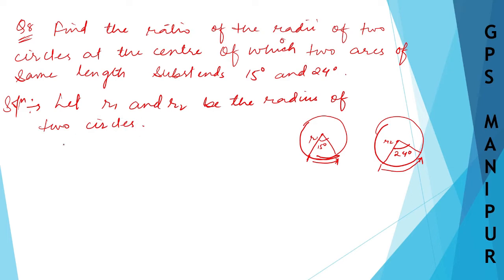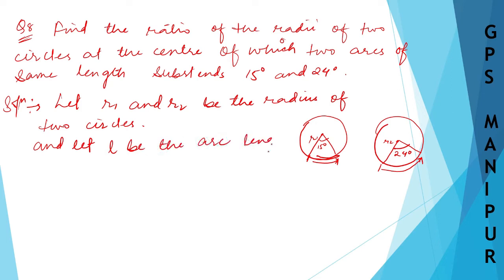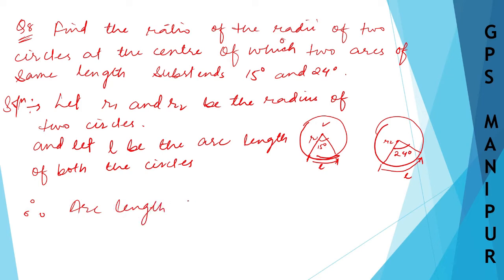Let r1 and r2 be the radii of the two circles, and let l be the arc length of both the circles. This one is also l and this one is also l because they are equal. Now I can write down: arc length of the first circle, l is equal to r1 into theta, that is 15 degrees. So l equals 15·r1 — this is equation number one.